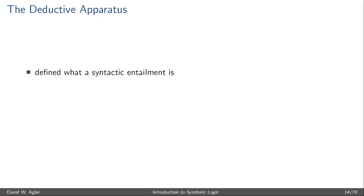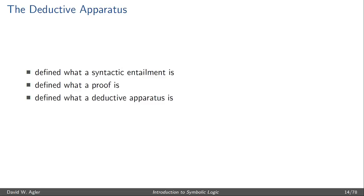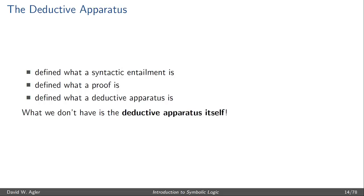In previous videos I talked about what syntactic entailment is, what a proof is, how to set up the proof, and a little bit about what the deductive apparatus is. In short, this is just a set of rules of inference, rules of reasoning, or derivation rules. But we don't have any rules formulated yet for this deductive apparatus.